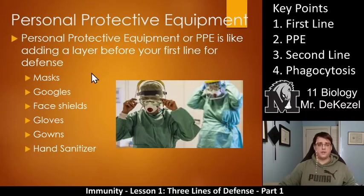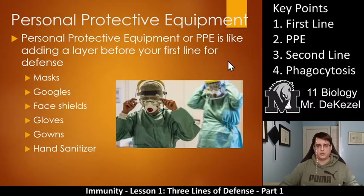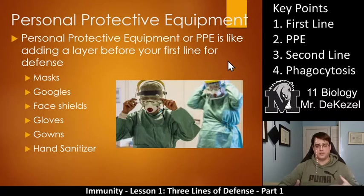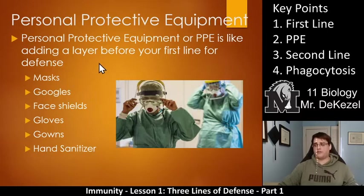Personal protective equipment, or PPE, is something many of us are wearing in class now — it enhances your first line of defense by adding a layer before it. PPE includes masks, goggles, face shields, gloves, gowns, and hand sanitizer — anything you do to stop an antigen from getting into your body. There are some professions where you need a lot of it, some where you need a few, and some where you need none, depending on the work you're doing.